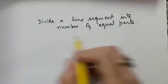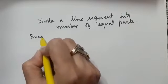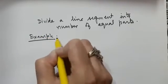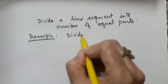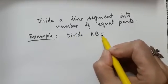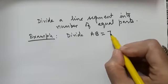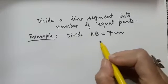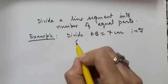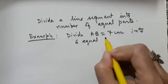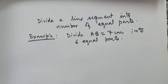So let us take an example and try to understand this. Divide AB, it's a line segment and its length is given as 7 cm. Divide AB equals 7 cm into 6 equal parts. Let us see how we can do this construction.